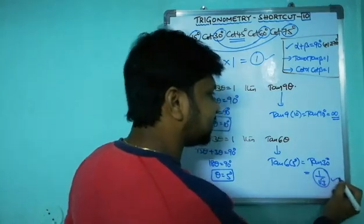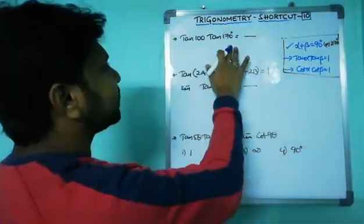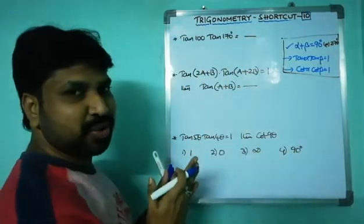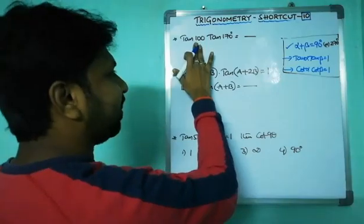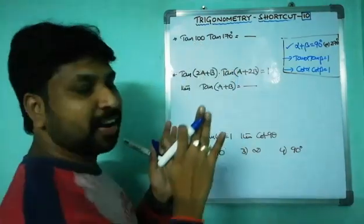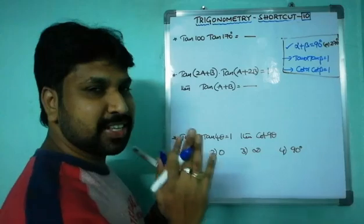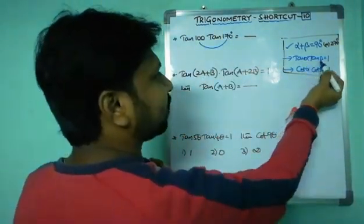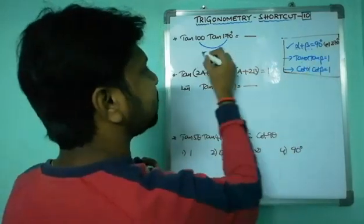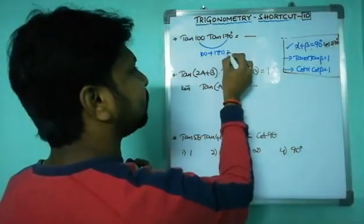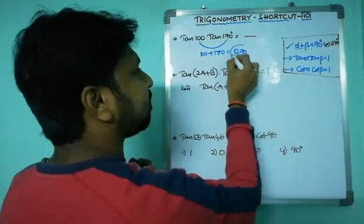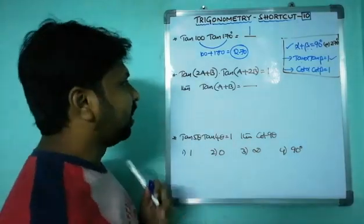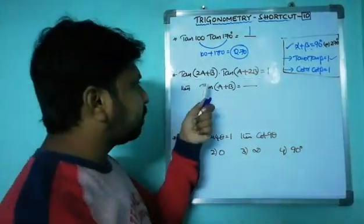Next example: tan 100° × tan 170°. No need to worry — just look at the sum: 100° + 170° = 270°. We noted that when the sum of two angles is 270°, the same property applies and the answer is 1.